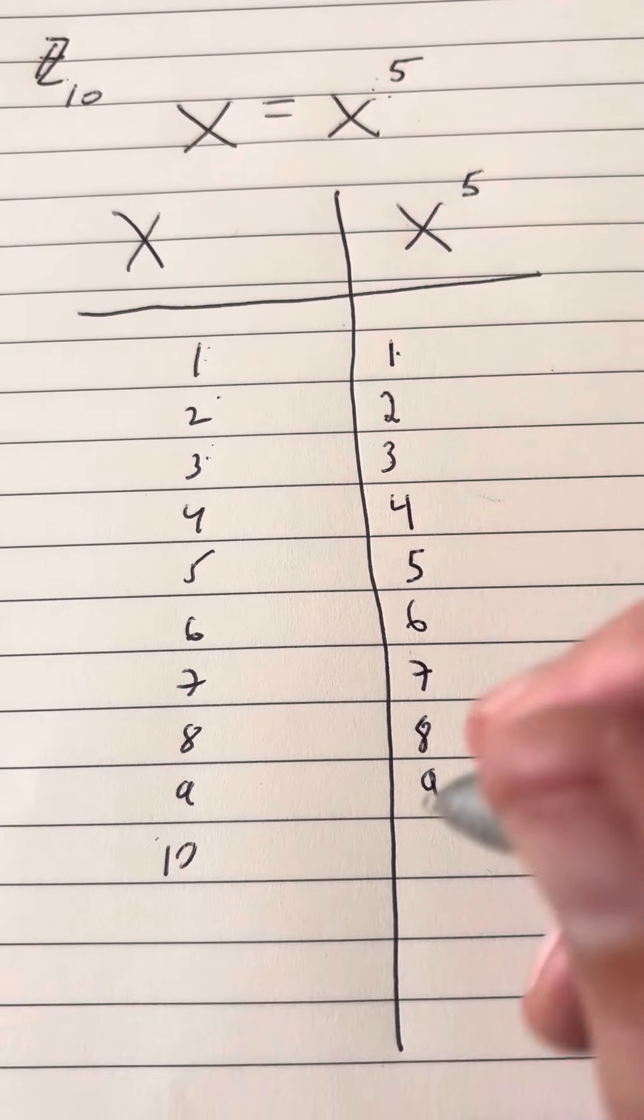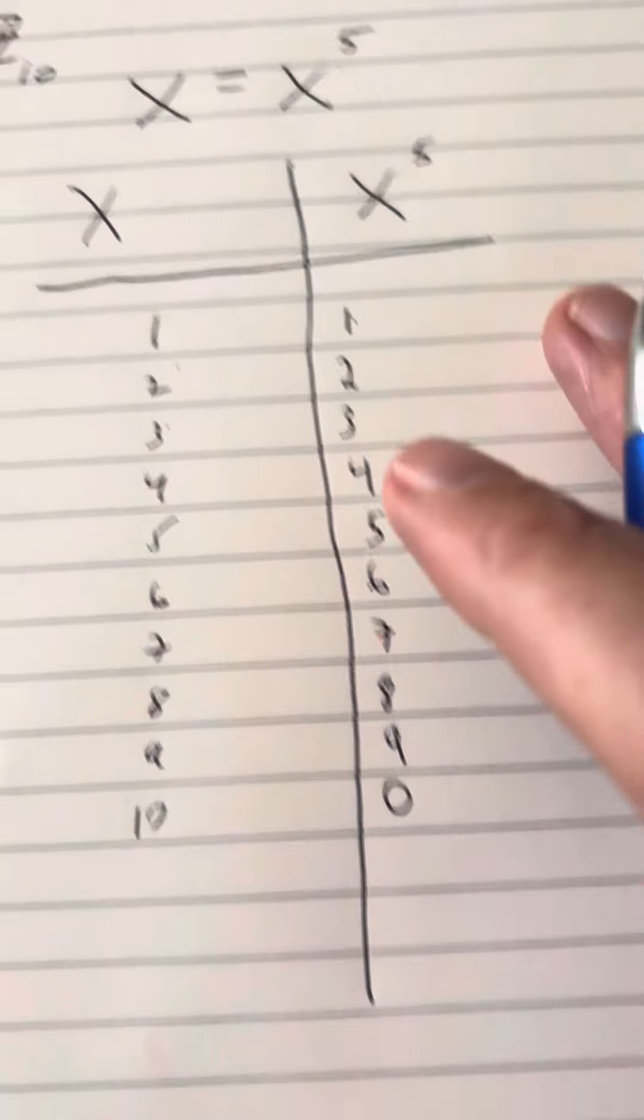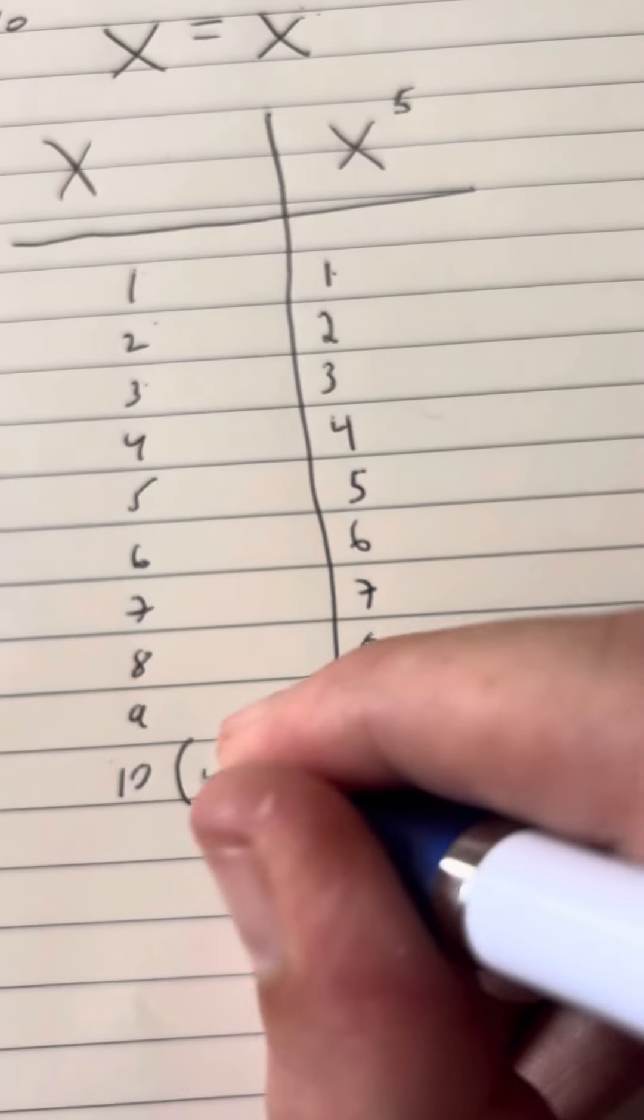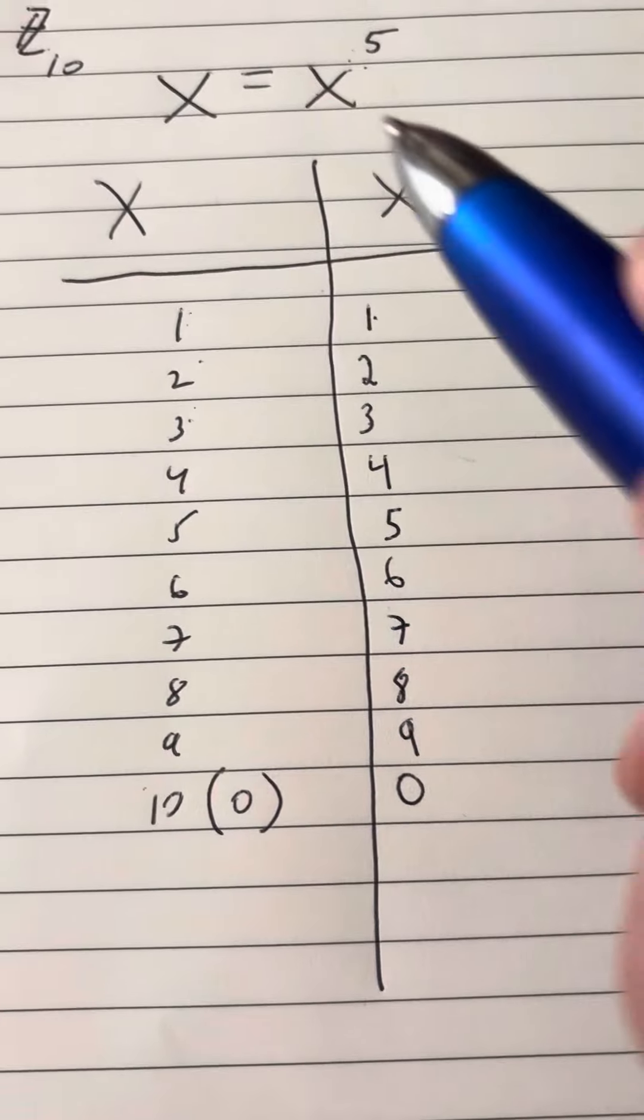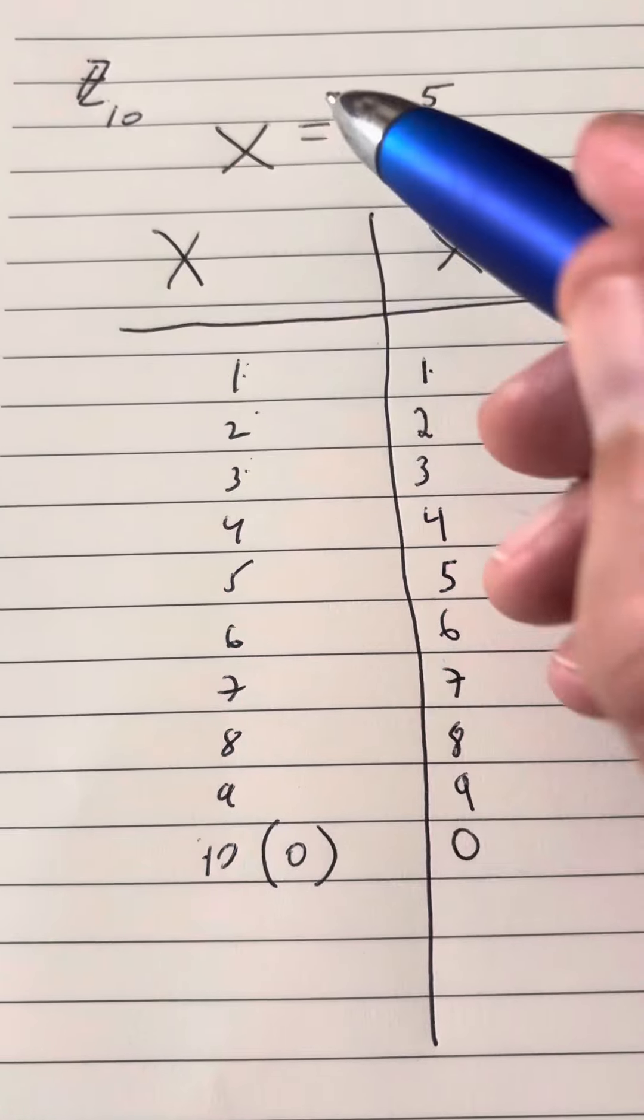And what you'll notice is that for each one the remainder will be whatever the value of x is. And of course if you put 10 in there you get a zero at the end which means 10 divides into it, so that corresponds with zero. And by the way 10 is the same thing as zero if you're wondering.